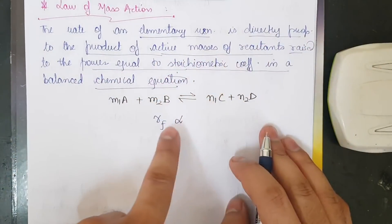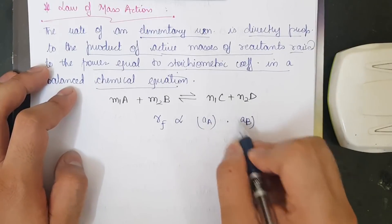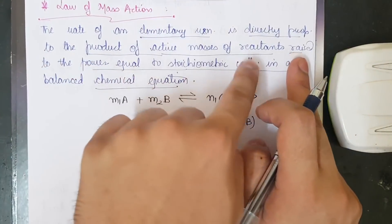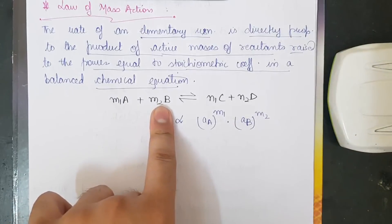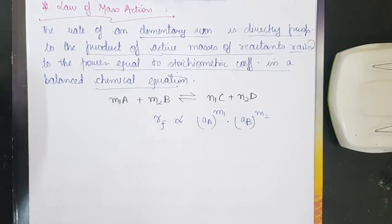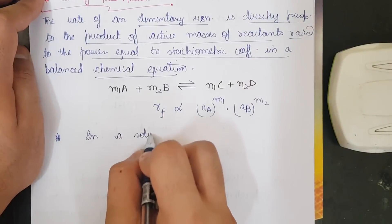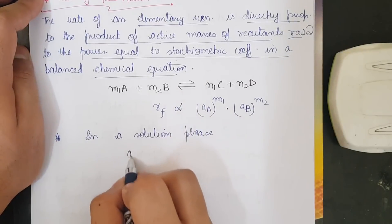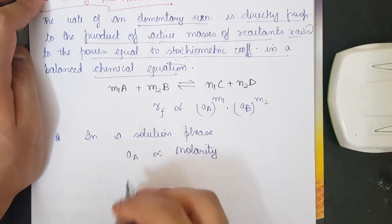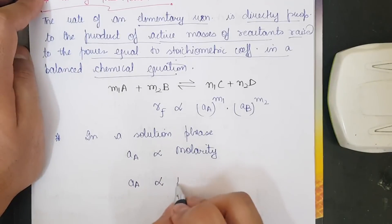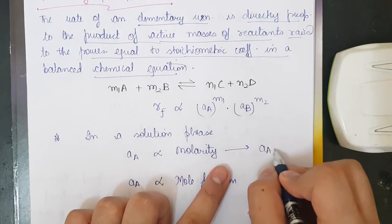The Law of Mass Action states that the rate is directly proportional to the product of the active masses. Active mass of A is written as [A]^m1 and active mass of B as [B]^m2, where m1 and m2 are the stoichiometric coefficients. In a solution phase, active mass of A is directly proportional to molarity, and also directly proportional to mole fraction.